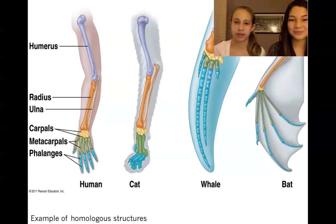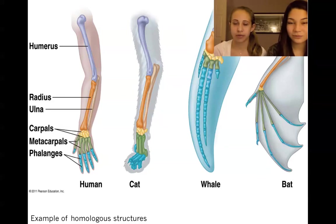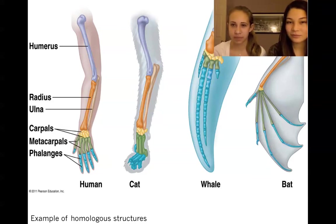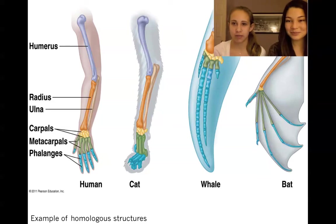This shows an example of homologous structures. In different organisms, there is a similar hand, arm, and forearm structure, made up of the phalanges or fingers, the metacarpals, the carpals or wrist, the two bones in the forearm called the radius and the ulna, and the humerus in the upper arm. These structures are similar in different organisms such as the human, the cat, the whale, and the bat, but they have evolved differently to suit different functions and different needs.